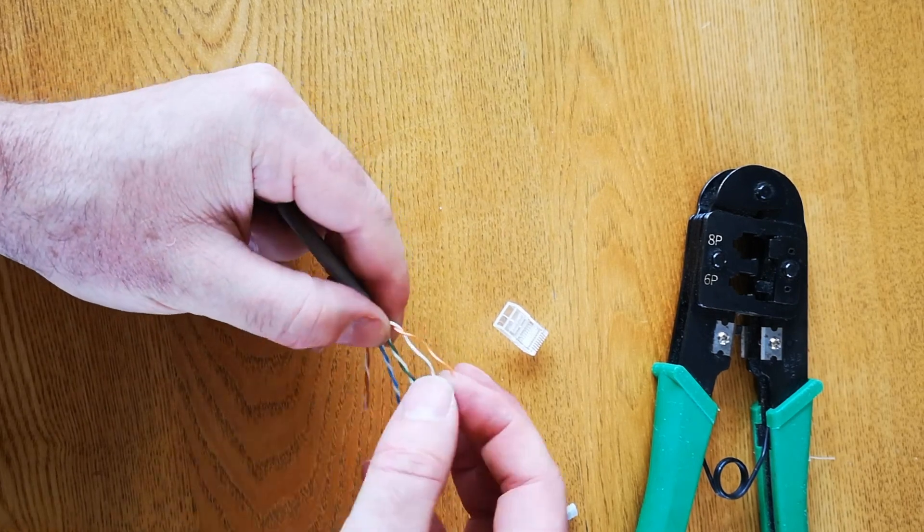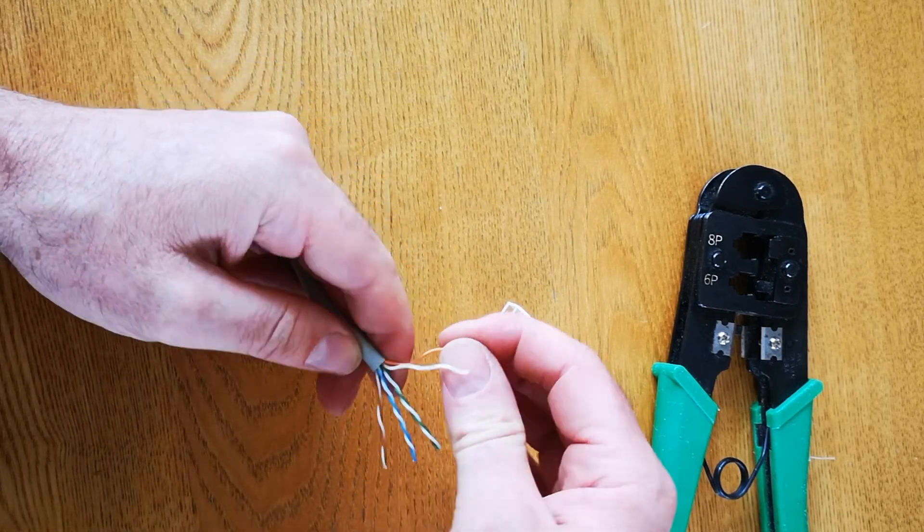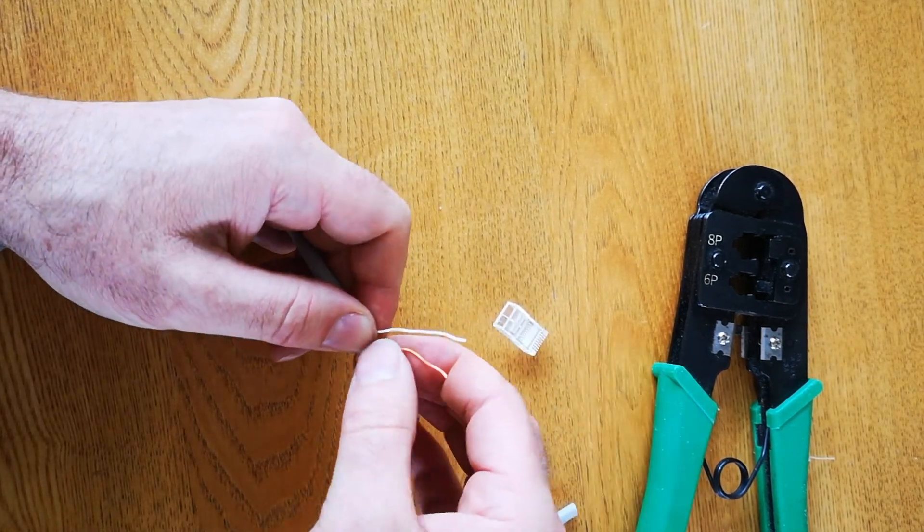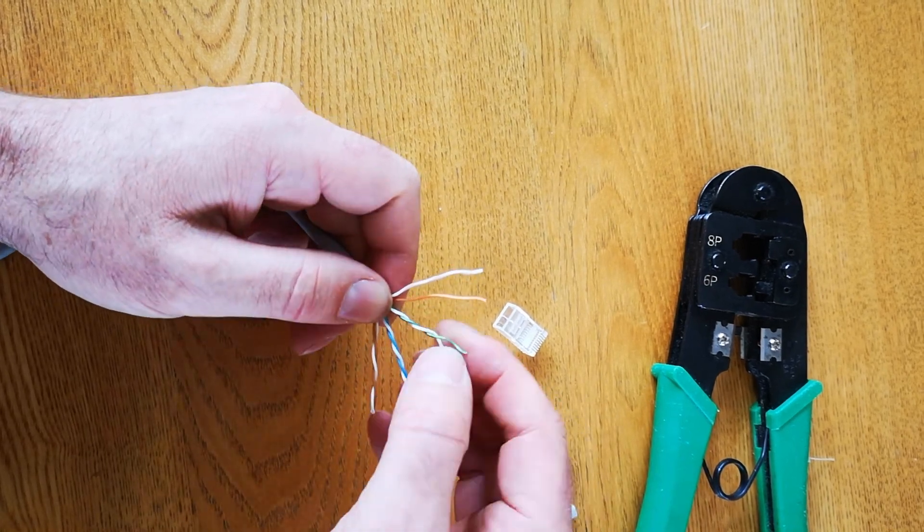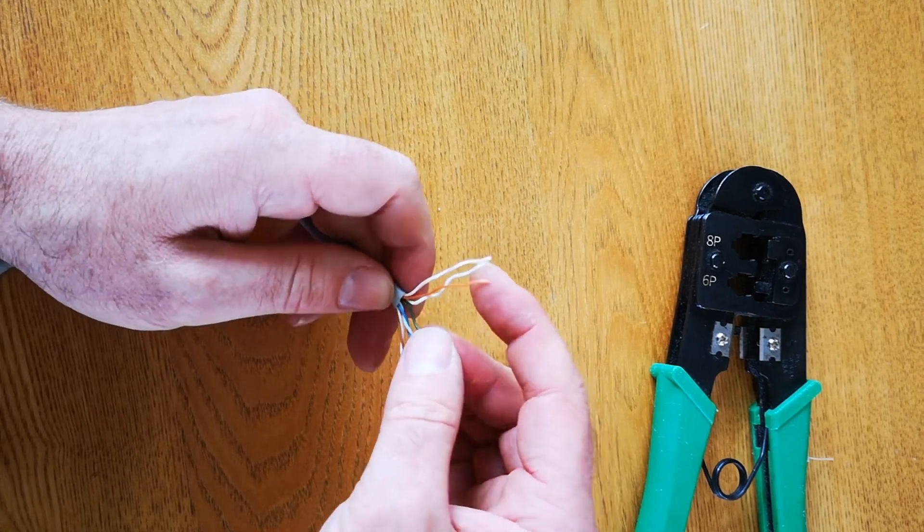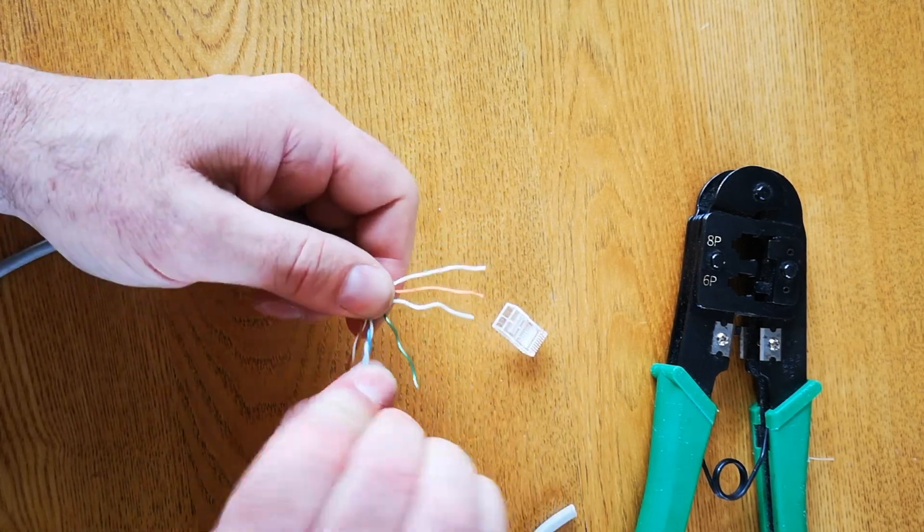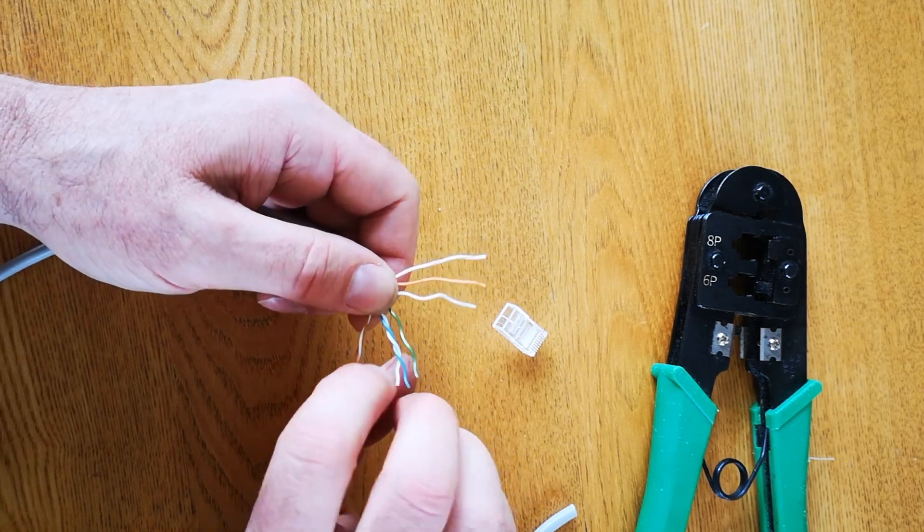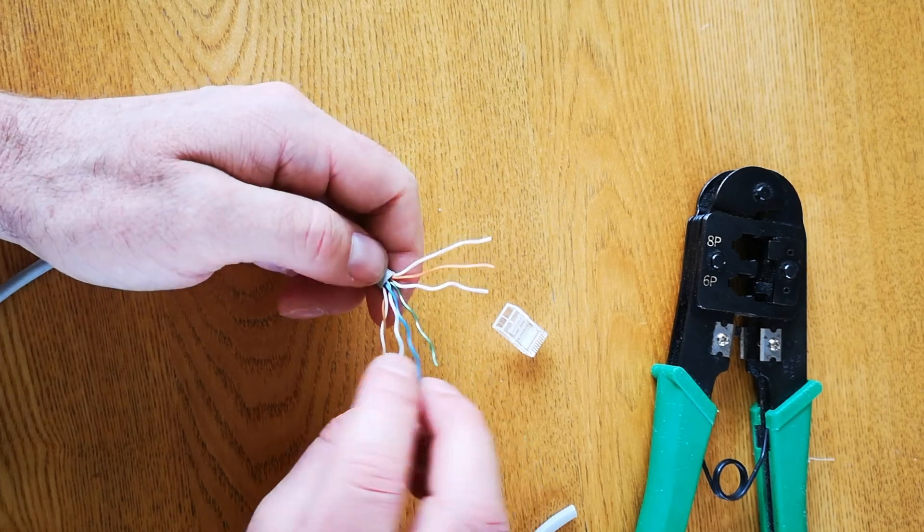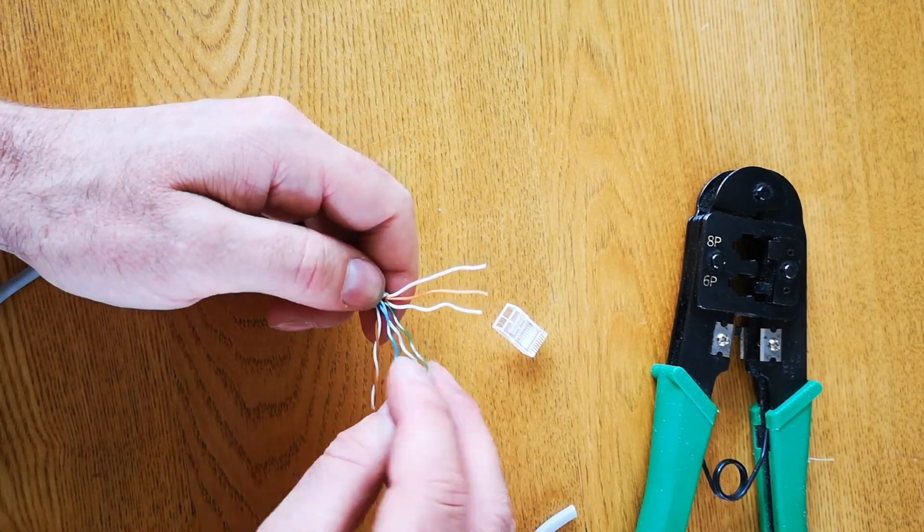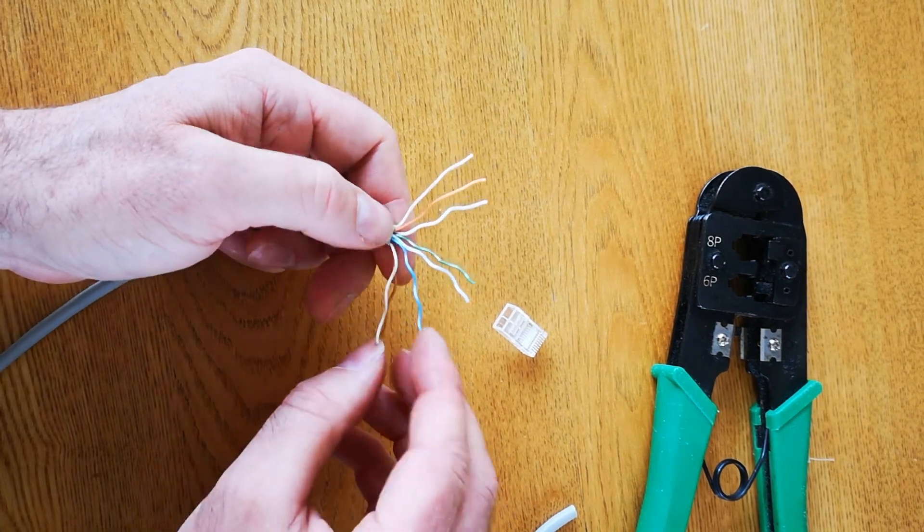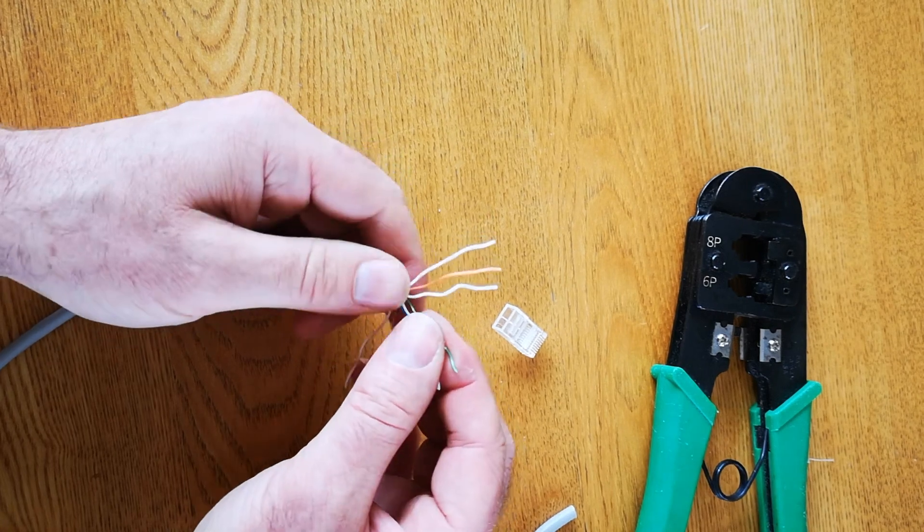So I'm going to untwist the oranges. Untwist them right back to the sheathing here, as far as you can. Untwist the greens. Untwist the blue. They're all twisted at different ratios. It's so that they cancel each other out, so there isn't noise in the signal. So some are twisted tighter than others. And the brown one. Untwisting them right back.